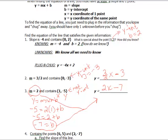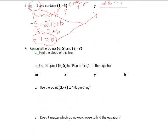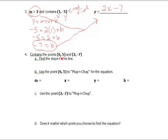What happens if I don't know slope? Well, I might have to find the slope. So if I have this problem here with points 6, 5 and 2, negative 7, I need to find the slope.